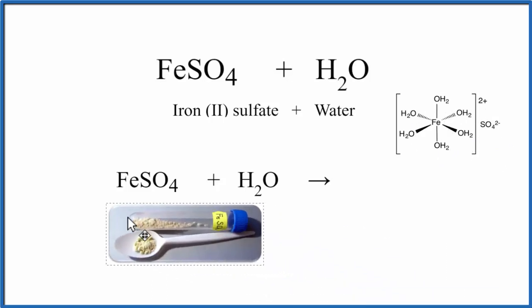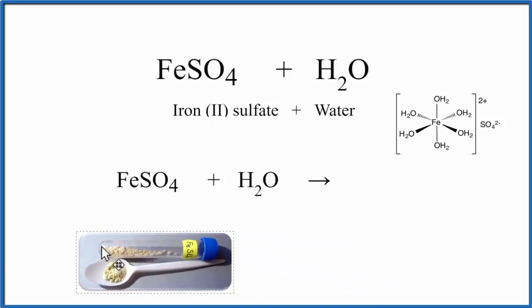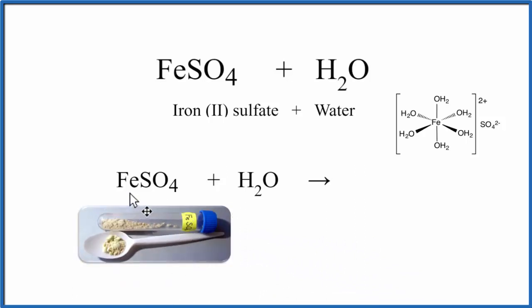So we start out with what's called anhydrous iron 2 sulfate. Anhydrous means there's no water. This is only FeSO4. It's a dry yellow powder. When we add the water, we get the hydrate.